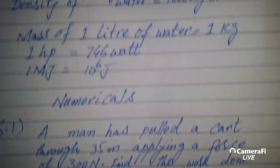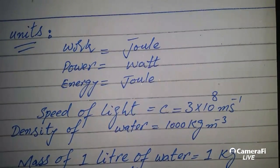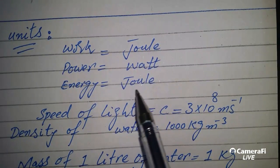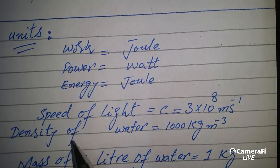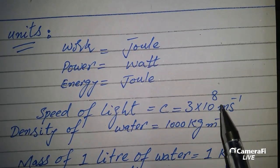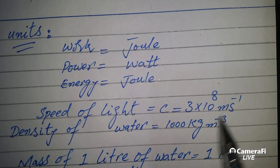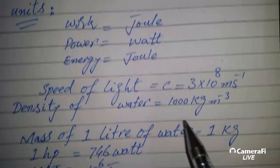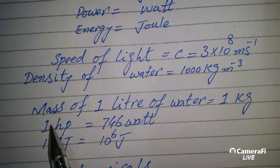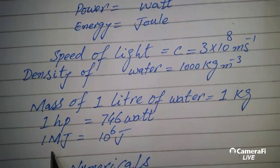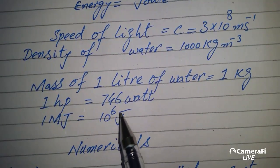The speed of light is multiplied by 10 raised to power 8 meters per second. The density of water is 1 kg per meter cube. The mass of one liter of water is 1 kg. One horsepower is equal to 746 watts. One mega joule is equal to 10 raised to power 6 joules.